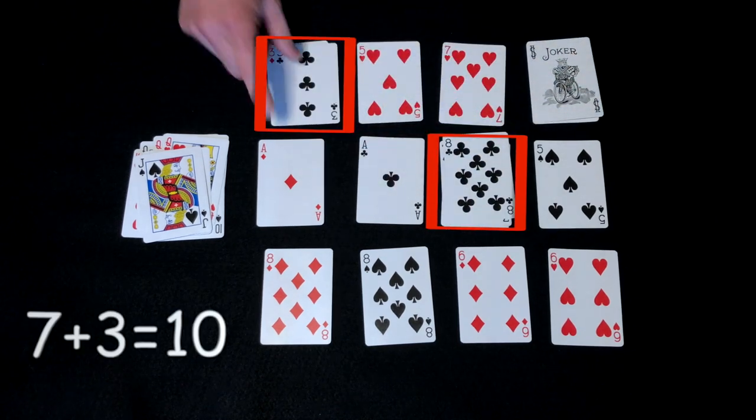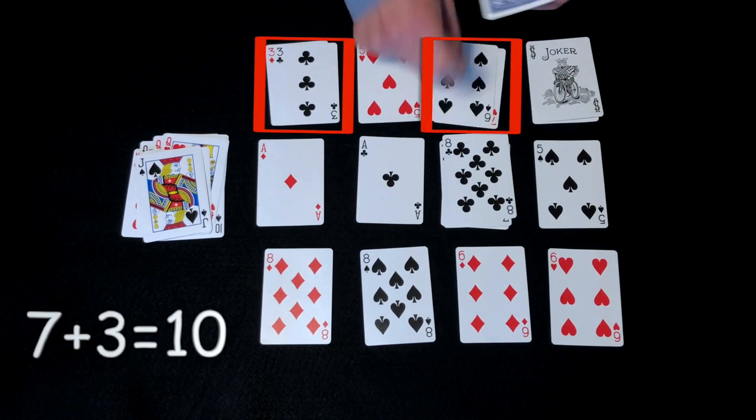Seven and three, that makes ten. Looking out at my cards, seven and three again, that makes ten.